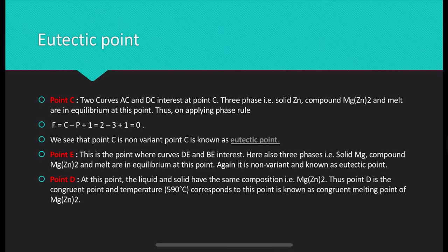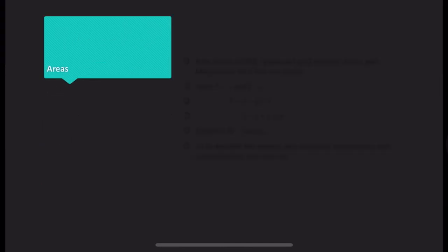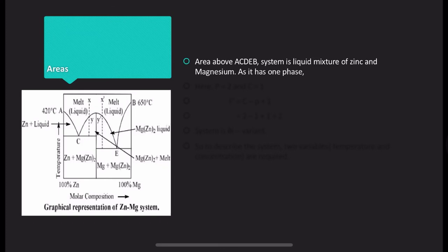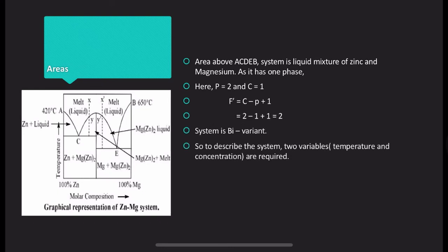Point D is the congruent melting point of MgZn₂, at a temperature of 590°C, where the liquid and solid have the same composition. At point D, the two-component system effectively behaves as a one-component system. The area above the curve ACDEB has only one phase — liquid melt — so P = 1 and C = 2, making the system bivariant. Both temperature and concentration must be specified to describe the system.